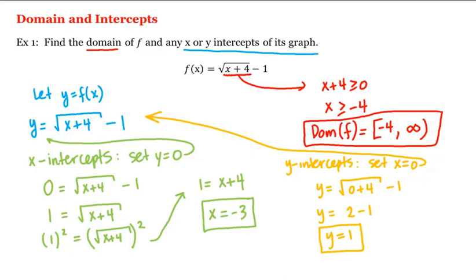Now can the graph of a function have more than one x-intercept or more than one y-intercept? There can be more than one x-intercept, but there cannot be more than one y-intercept. Because if this is indeed a function, then when x is equal to 0, there cannot be two different outputs for y. So therefore there can be at most one y-intercept.